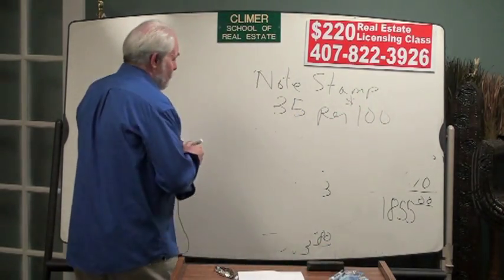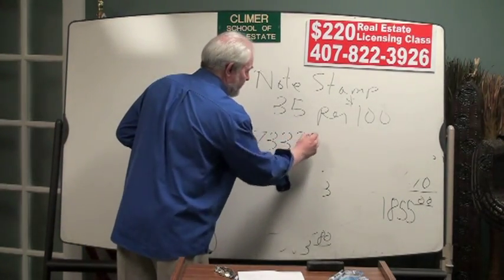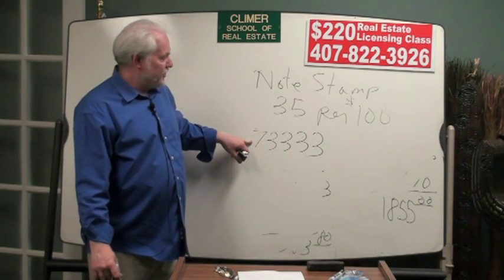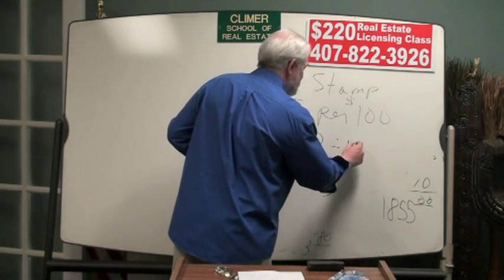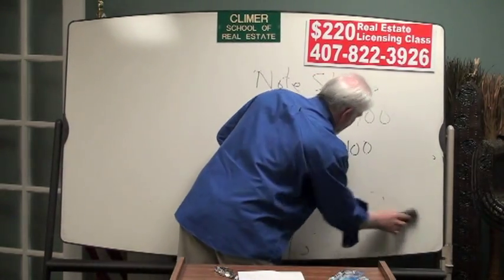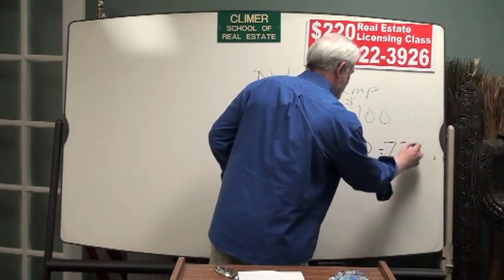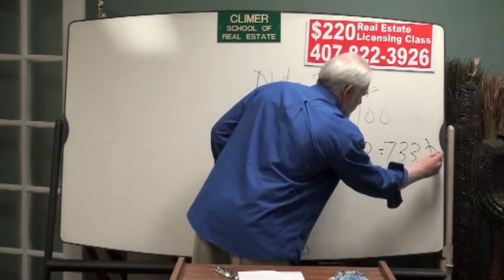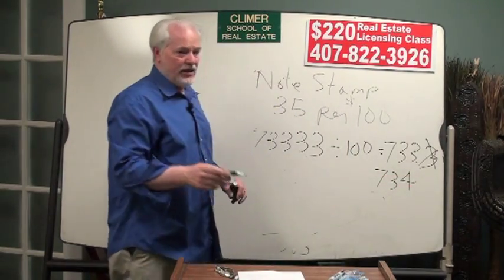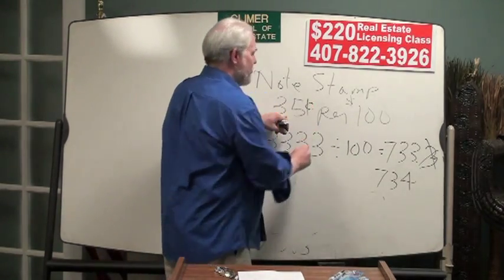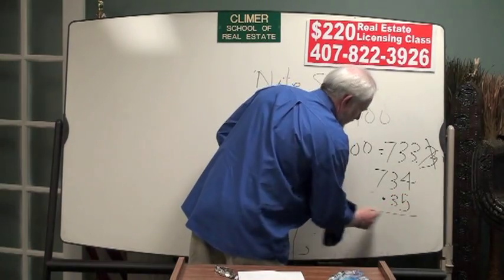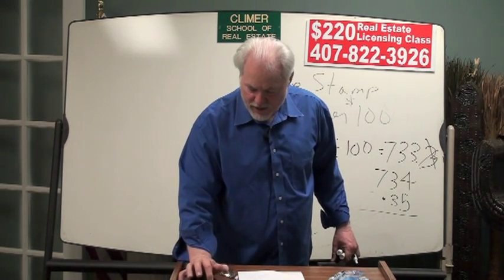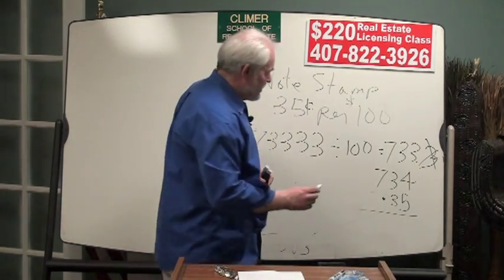So if you go out and got a mortgage for, say, $73,333, you bought that property I just gave you, you put $10,000 down, you got this new mortgage for $73,333. We divide this by 100, and we see that you need 733.3 stamps. You can't buy .3 of a stamp. So you need 734 stamps. They cost 35 cents, so times .35. Let's do this together. 734 stamps times .35 is $256.90.